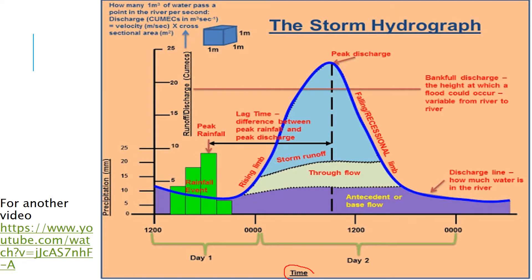Down at the bottom on the X axis, we've got time — you can see there are two days here, with hours marked. Then on the Y axis, we've got a couple of different things. We've got precipitation in millimetres, and we also have runoff and discharge in cumecs. You need to recognise that precipitation means rainfall.